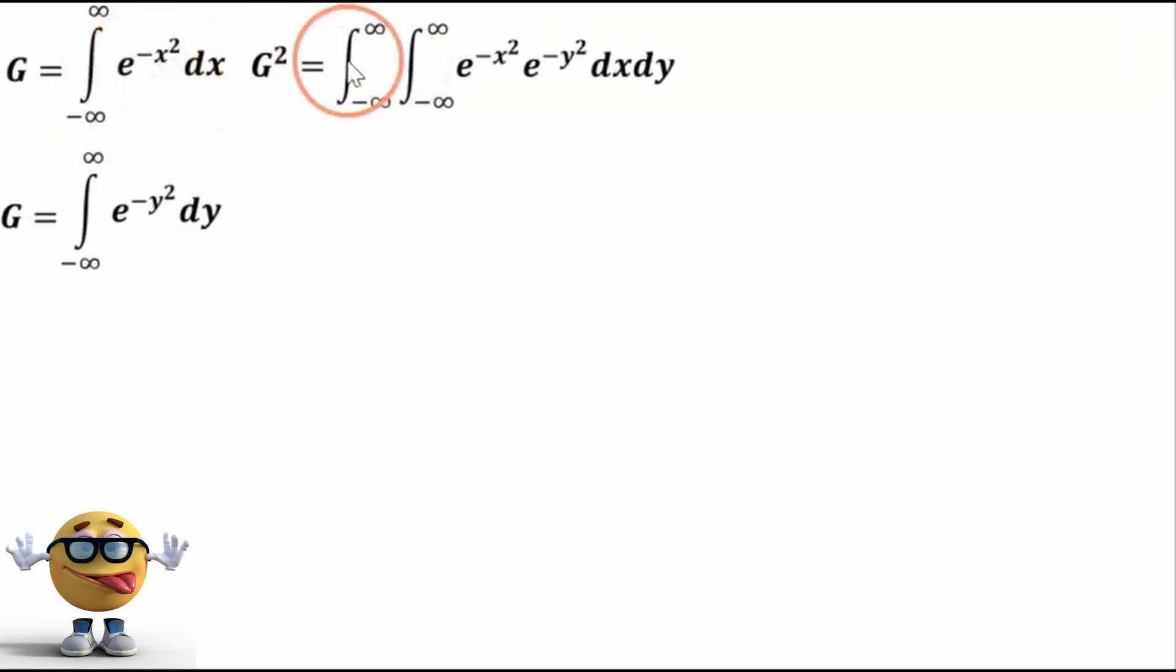So if we square these functions, g squared, it's the same as multiplying each of these integrals together, which is what we did right here. And now we can tidy this up a little bit by merging it into one exponent.